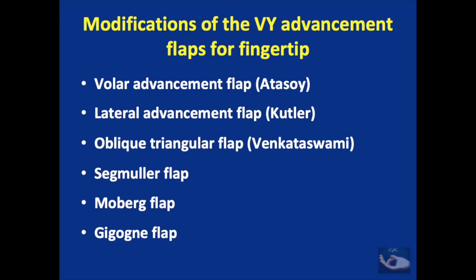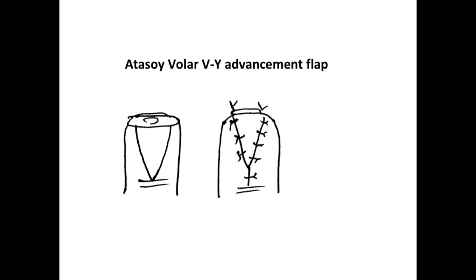One of the applications for the V-Y advancement flaps is for fingertip injuries. There are many modifications of this V-Y flap for fingertip injuries which we shall see now. The Atasoy volar V-Y advancement flap is ideally indicated for dorsal oblique amputations of the fingertip. It gives a very good contour of the fingertip and sensate skin on the tip.